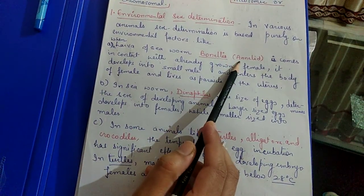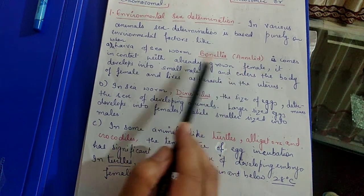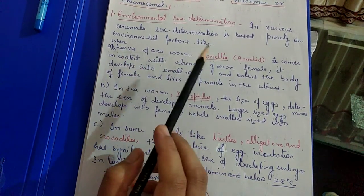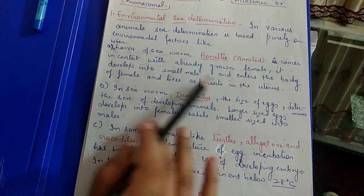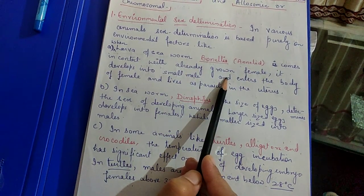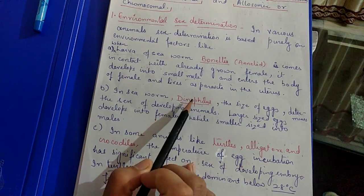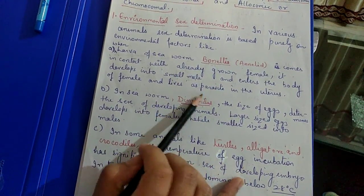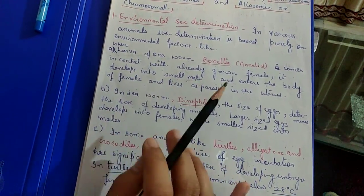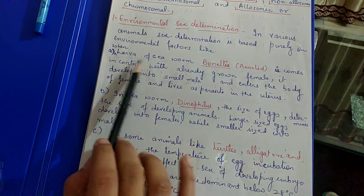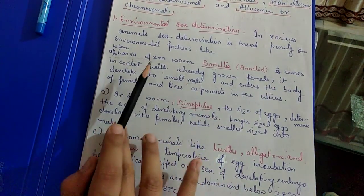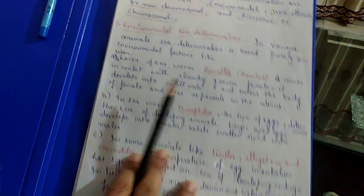There is one organism which belongs to phylum Annelida. You can see when larva of sea worm Bonellia, when that larva grows near an already grown female, it will become male and enter the female's body and remain in the uterus as a parasite. If it doesn't grow near a female, then it will become female.